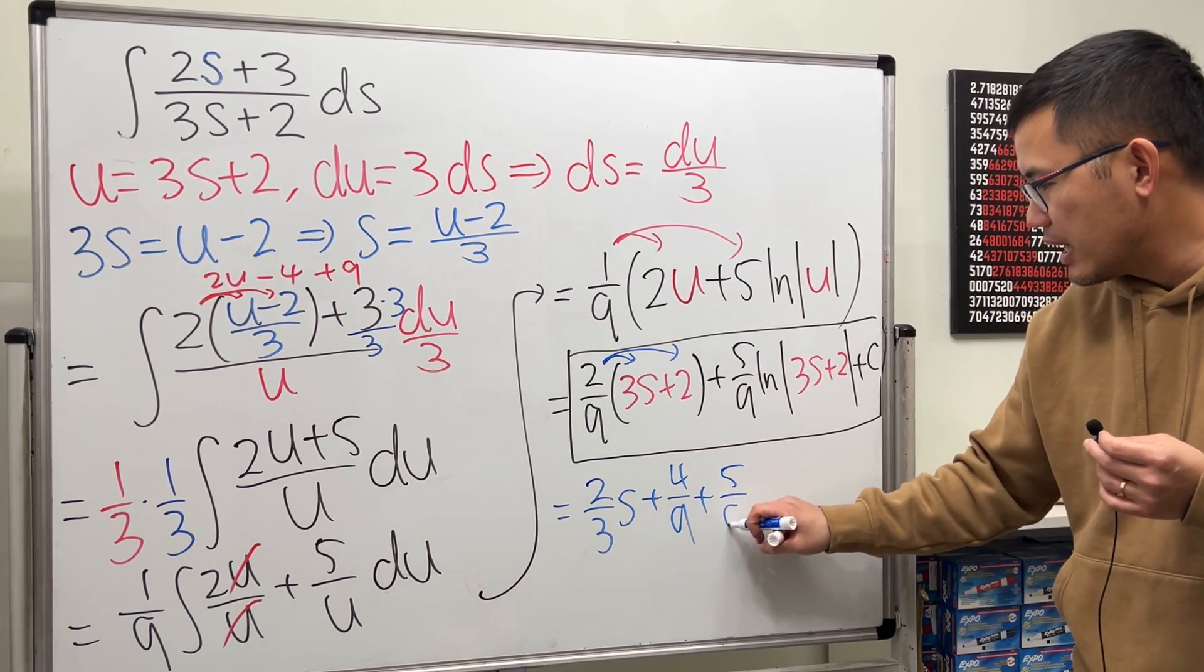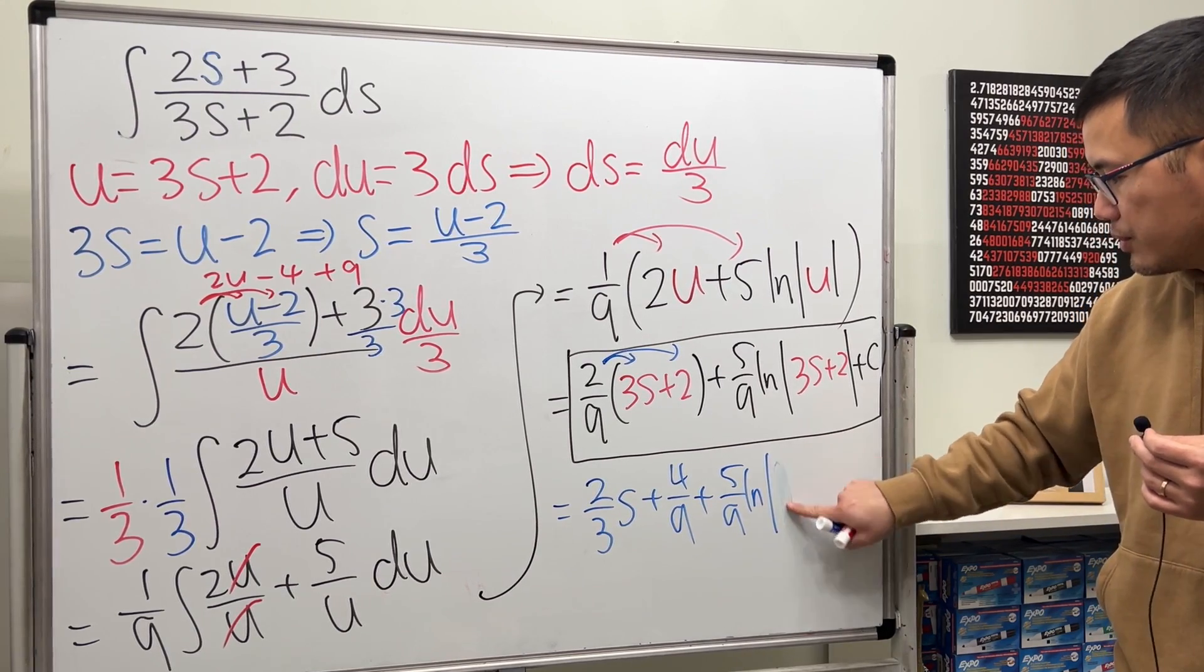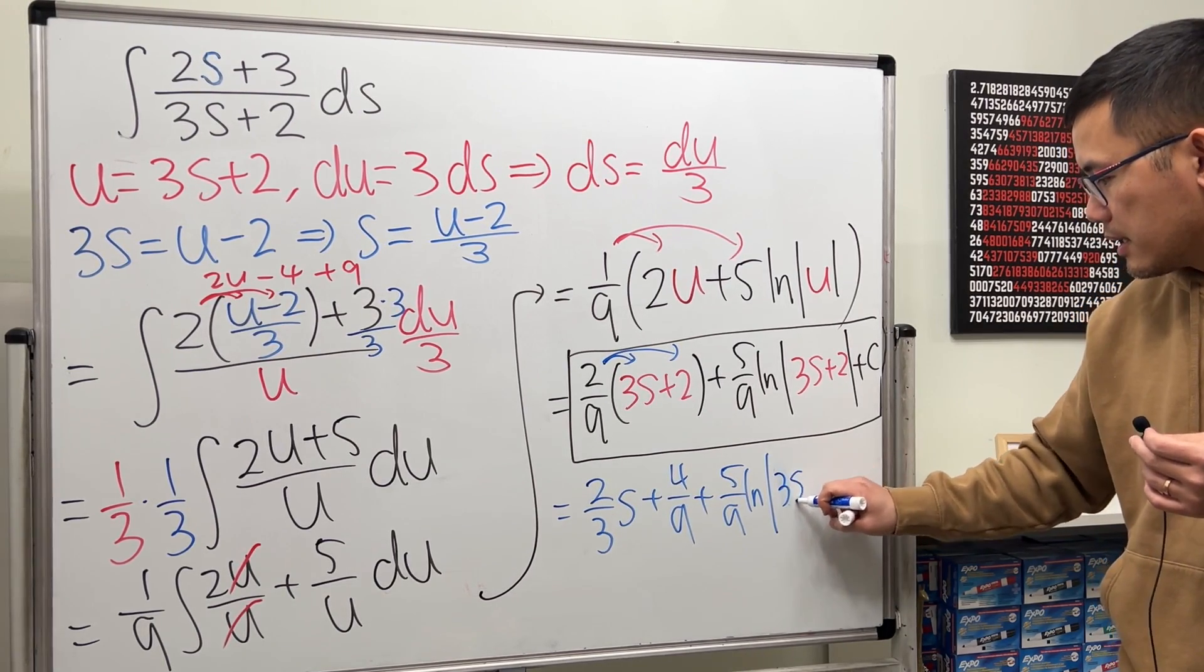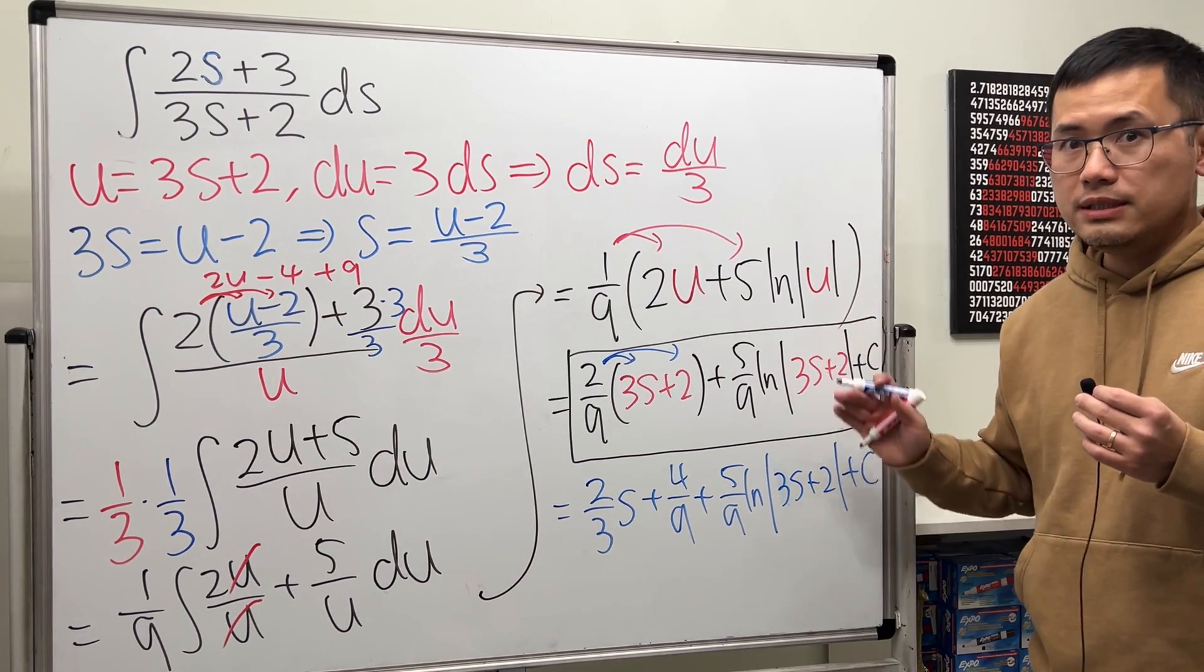5 over 9 ln absolute value 3s plus 2. And then at the end, we have that plus c. So of course, this and that are the same thing.